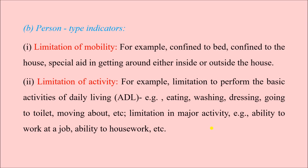Person type indicators include limitation of mobility — the person cannot move freely and is either confined to bed or confined to the house. This also includes needing special aid to get around, such as a crutch or a walker, inside or outside the house. Another person type indicator is limitation of activities — some activities may be limited because of the disability, for example, limitation in performing the basic activities of daily living (ADLs) such as eating, washing, dressing, going to the toilet, and moving about.